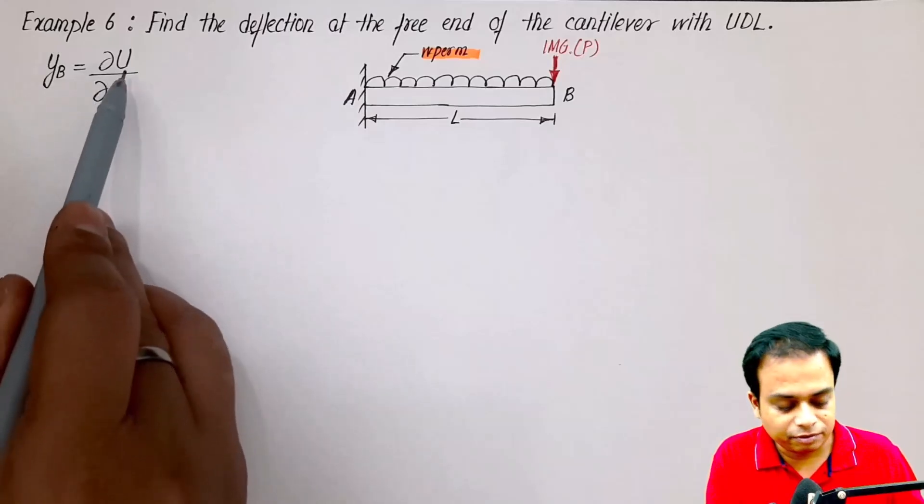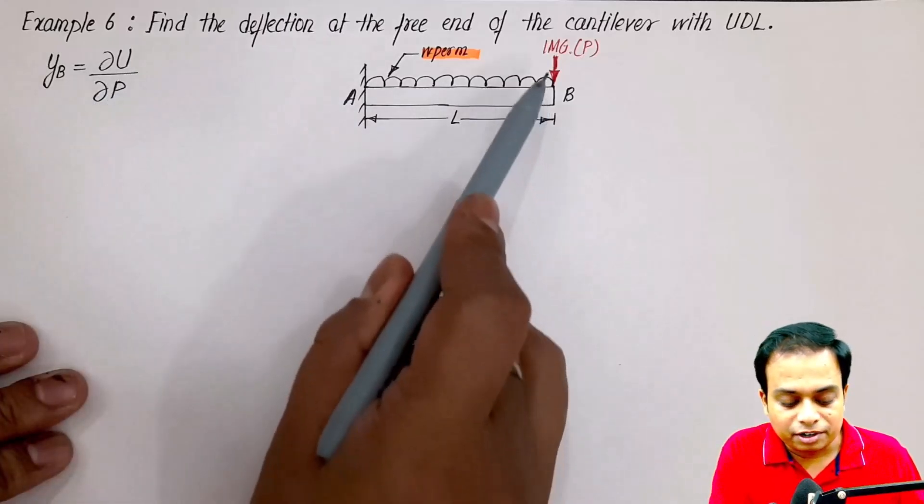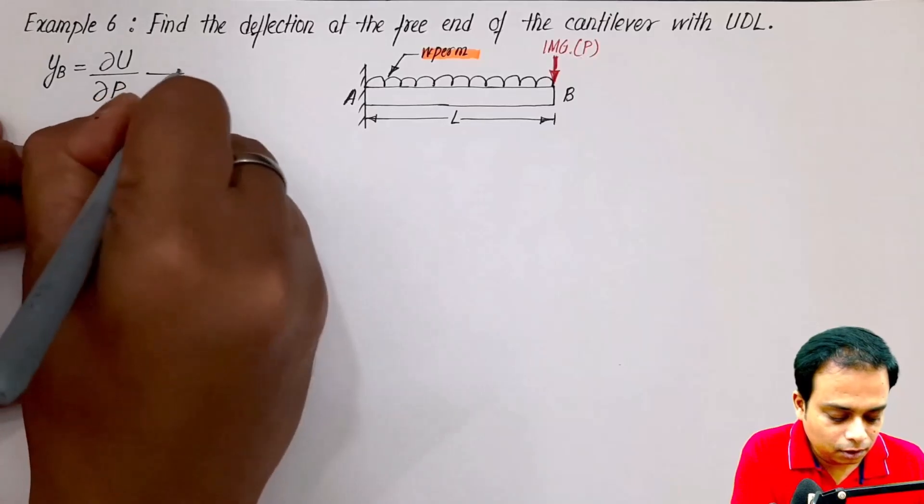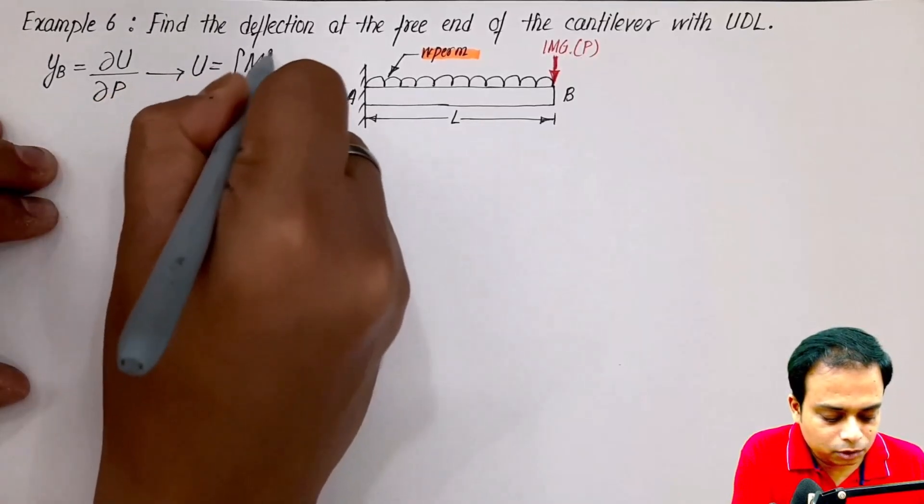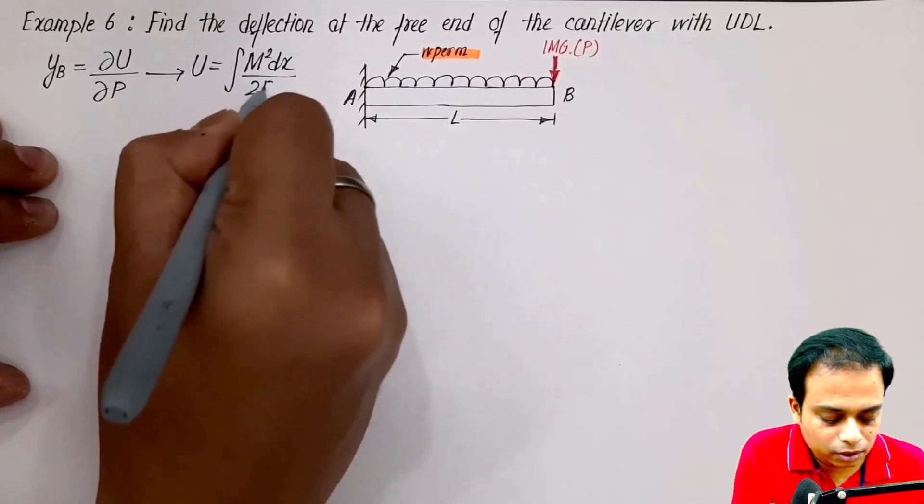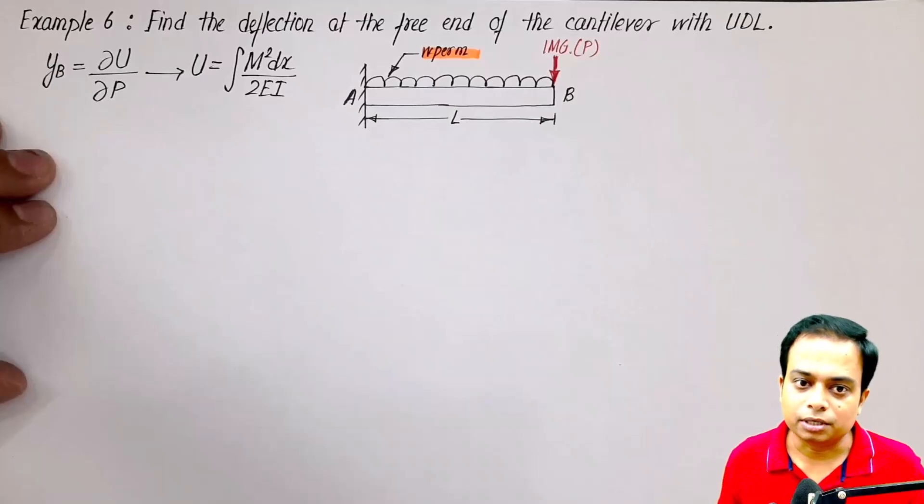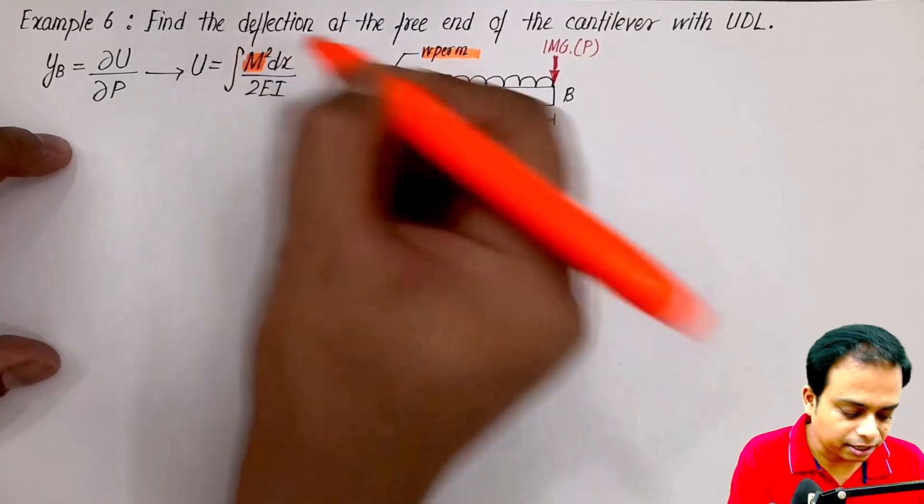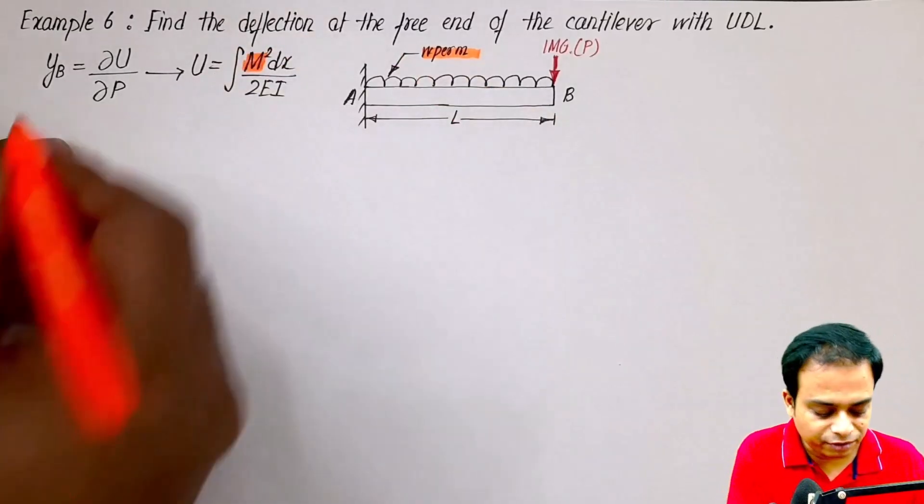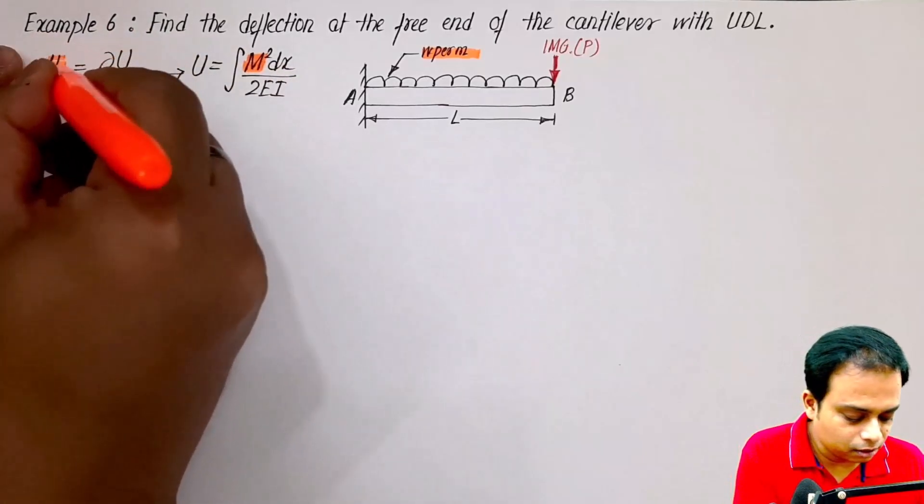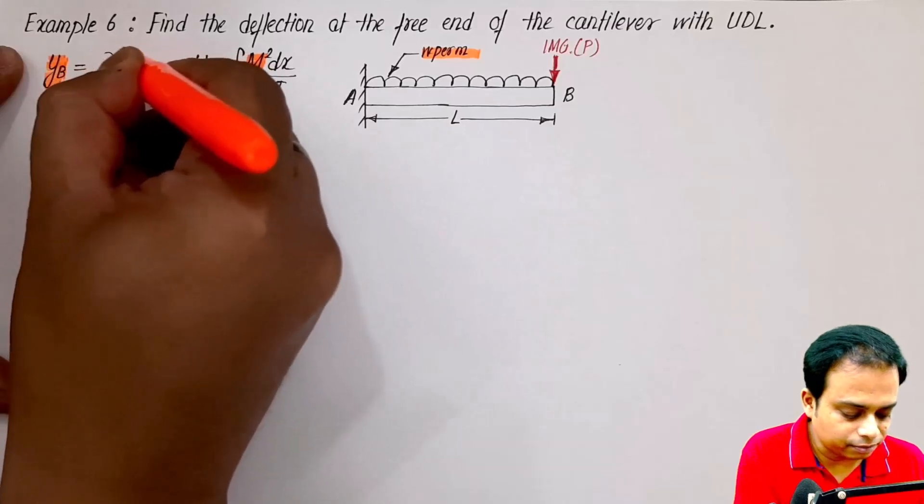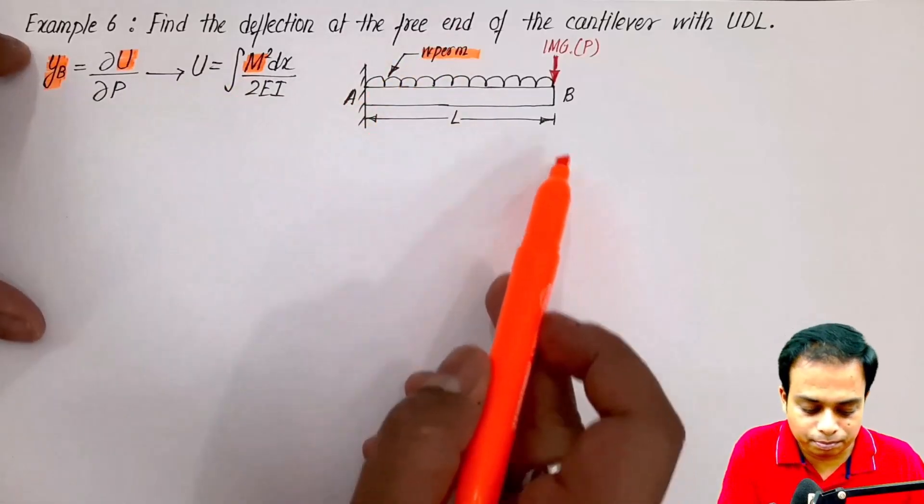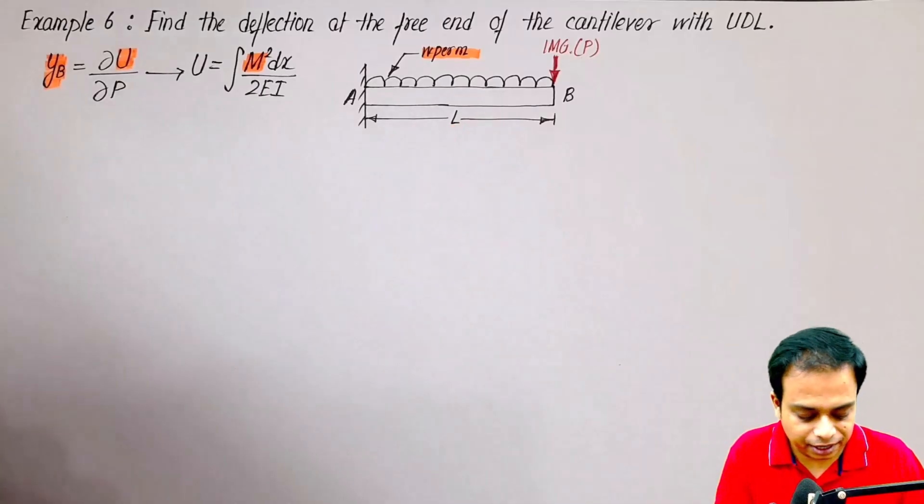We can find the deflection through this formula: partial derivative of the strain energy at this point B and differentiating with respect to P. Secondly, you need the strain energy. For strain energy, U is equal to integral m square dx over 2EI. That is the formula that you have to use. Here you've got another objective: you have to find this M. For finding the deflection at B, what you need to find is the strain energy. For finding the strain energy, you need the moment. And for finding the moment, you need to take a section from the free end.